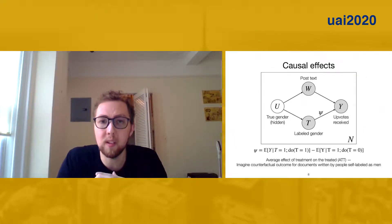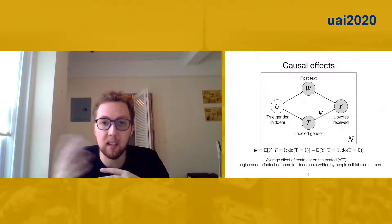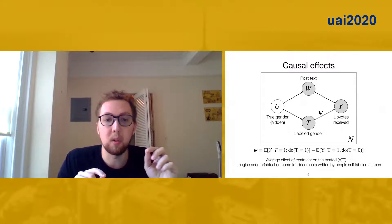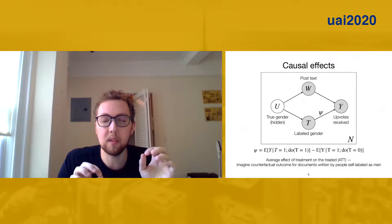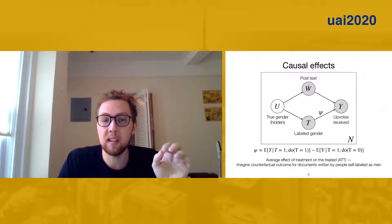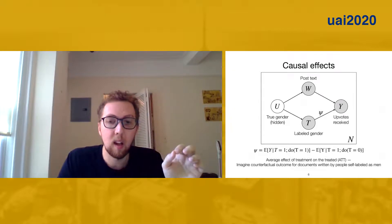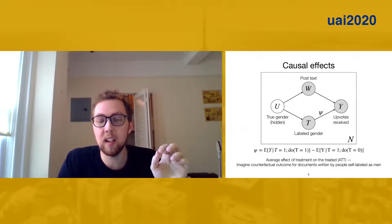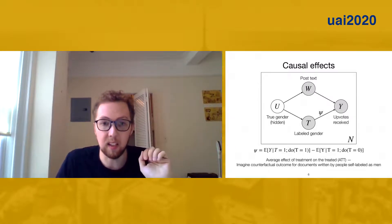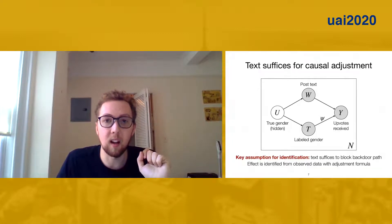In particular, what we're interested in is this parameter psi, the ATT, which we're going to formalize as the difference in expected outcomes across men between intervening and setting the gender label to say men versus intervening and setting the gender label to say female. So this is the counterfactual quantity that we're trying to estimate.